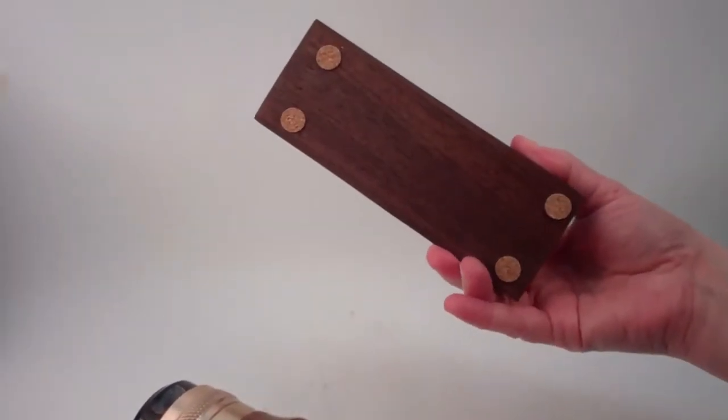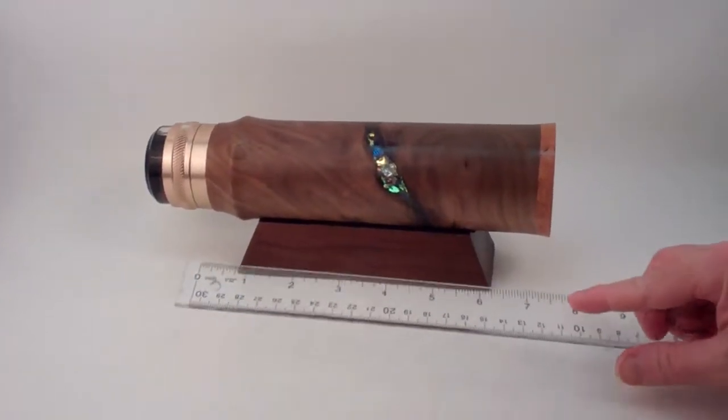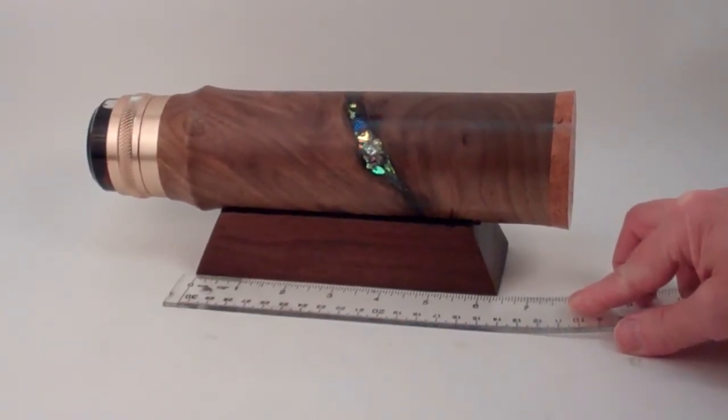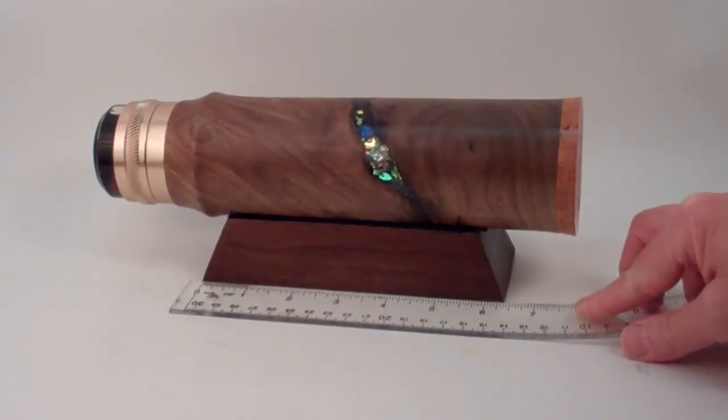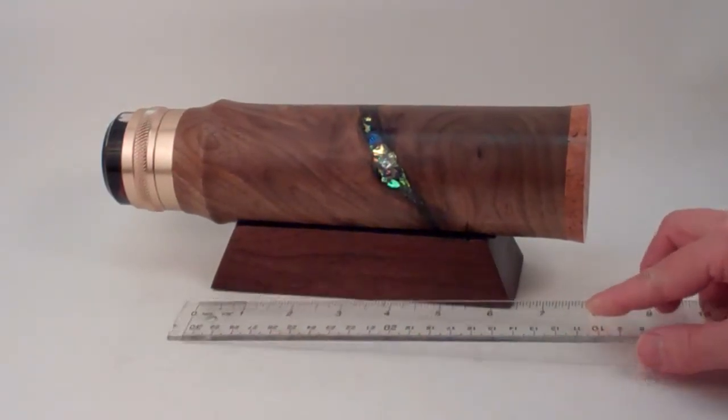The base is also solid walnut and it features cork feet and a black suede lining for the kaleidoscope to rest upon very securely. If you have a special occasion gift that you wish to have a plate engraved to go onto the base we can do that for you, and the base itself has a width of six and a quarter inches.